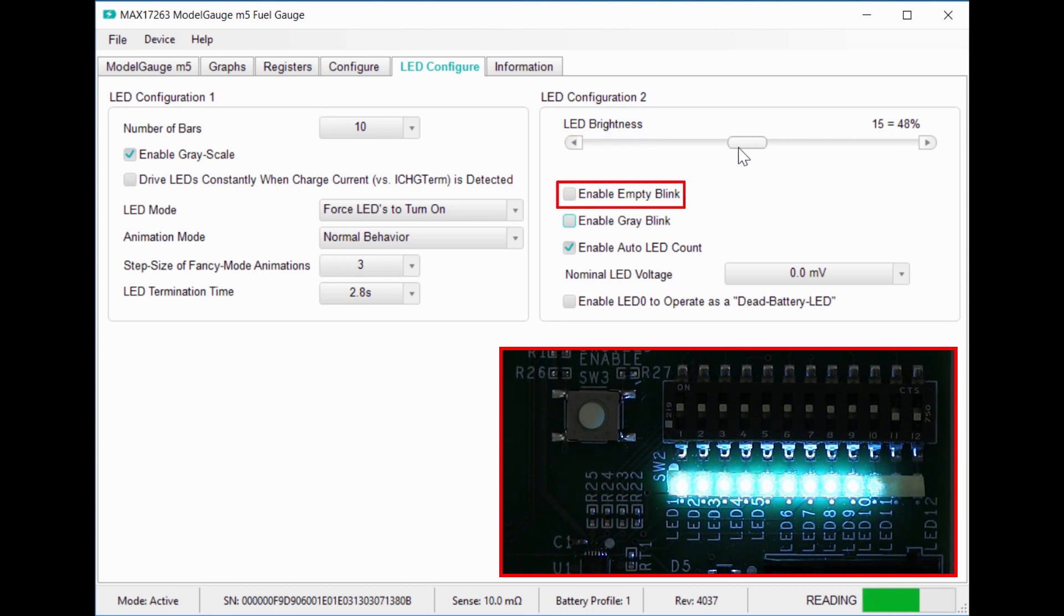The empty blink option will blink LED 0 instead of showing 0 bars, so that you know you're getting a valid reading. The speed of all these blinking features is also controlled by the LED animation time.